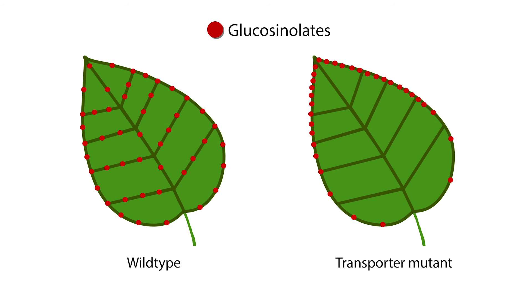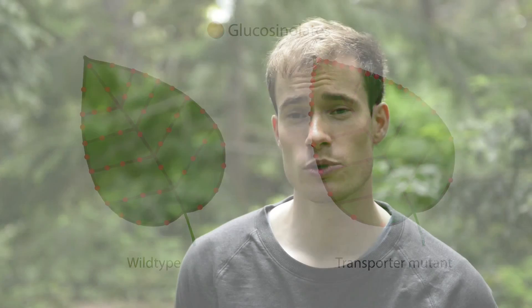Much to a surprise, more glucosinolates accumulated along the leaf margin in the transporter mutants. This showed that the transporters are not required for accumulation of glucosinolates at the leaf margin. Instead, the transporters are responsible for accumulation and storage of glucosinolates along the vasculature. And in their absence, glucosinolates move along the vasculature to the leaf tip.